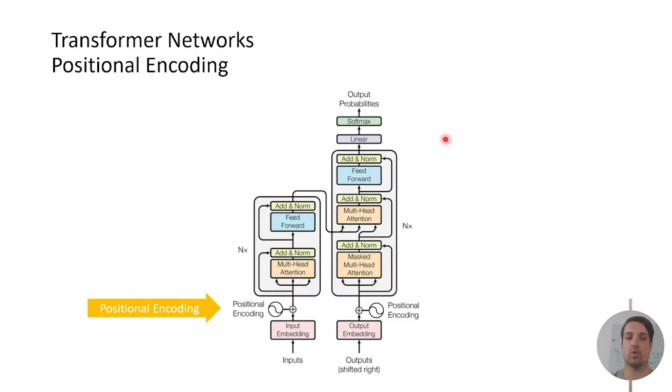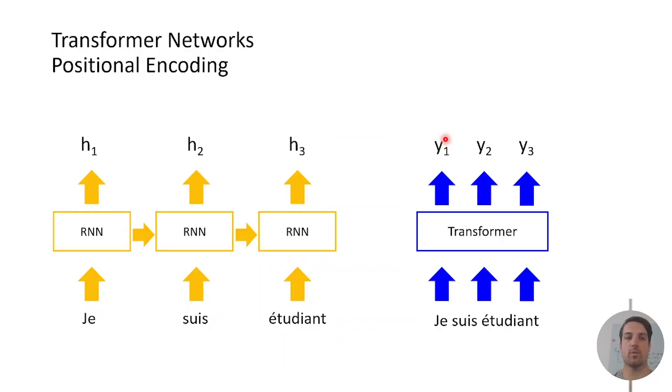Now we come to the positional encoding which is a very important part of the algorithm. The data in the recurrent structure is processed in series. Each recurrent unit knows the position information of each data point. For transformer networks we are enabled to parallelize the operations.